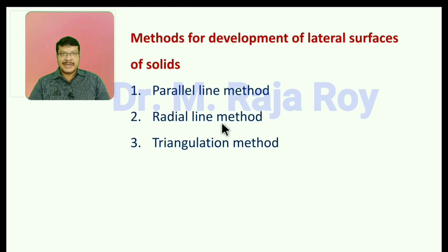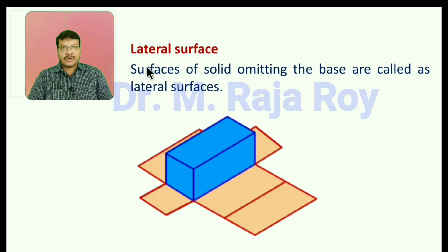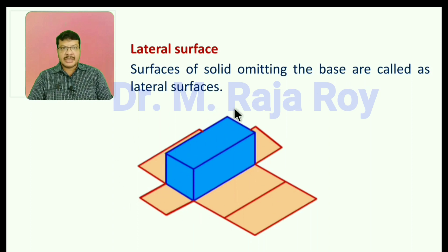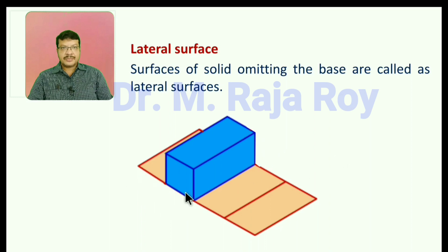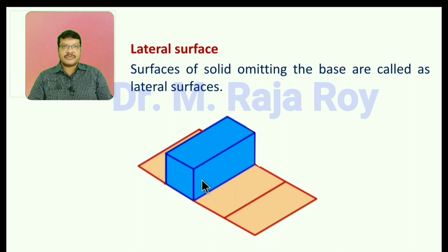I will explain all these methods in detail in the coming videos. Now see the definition of lateral surface. Lateral surface means the surface of the solid omitting the bases. If you omit the two base parts, the remaining part of the development is called the development of the lateral surface. In our problems we will draw the development of lateral surface only, because getting the lateral surface is somewhat difficult, so we will focus on that.